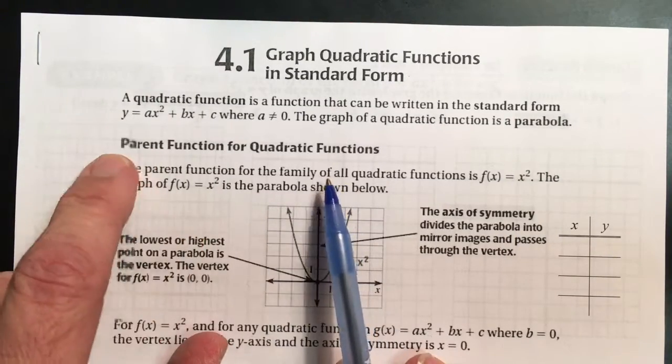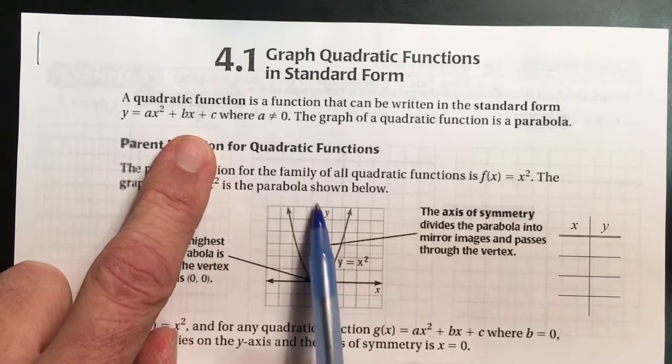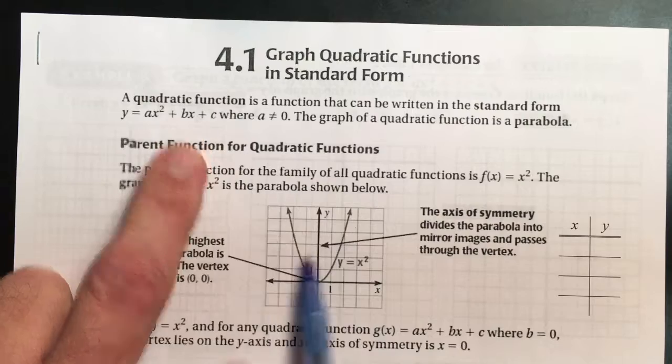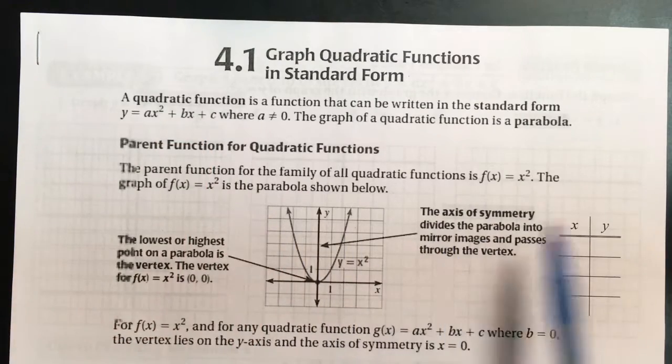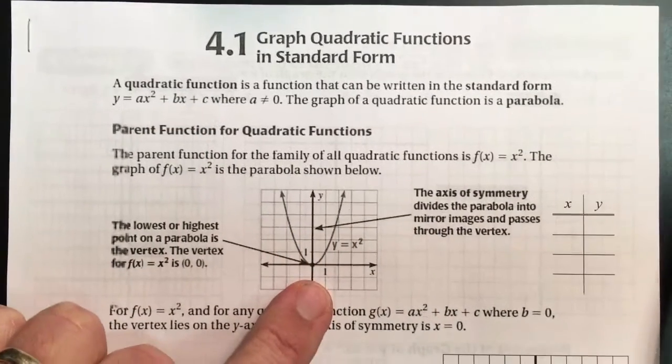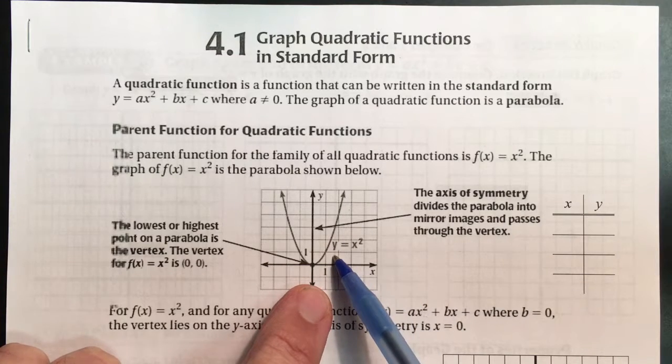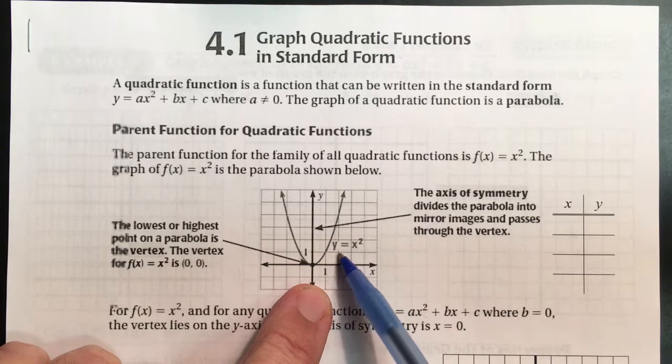Early on, we're going to do just parts of this formula and show you how that part is graphed. We'll add each of the other terms to show you how it can change the graph around. This is known as the parent form, and it's simply y equals x squared.